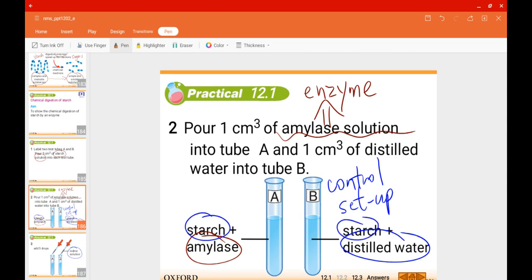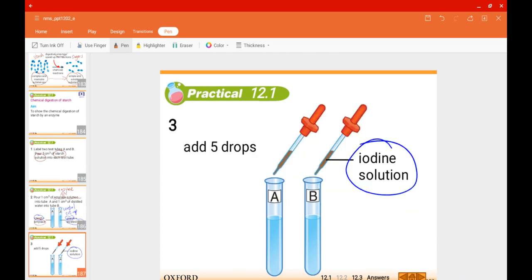In each of these test tubes you have starch as well. When we add iodine solution to starch, what would be the color change? Yes, they would turn from brown to blue-black. The original color of iodine solution is brown, and once you add it inside these two test tubes, it will become blue-black in color. We've already learned this in Form 2 and also this year.